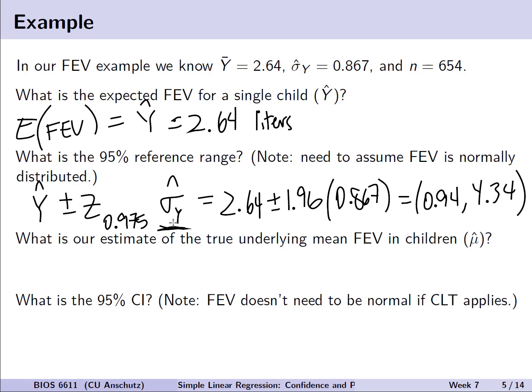So now we have the question, well what's the estimate of the true underlying mean for FEV in all children? Or in other words, what's our estimate of mu hat? Well in this case, we know based on the data we've been given, it is also equal to 2.64 liters. We have no predictors to use to say conditional on an x, what's the mean? And this represents what we saw previously too, that if we have a distribution, for example, if we assume x is normally distributed with mean 2.64, and variance 0.867 squared, that the mean for both x and the sample mean x bar will both be 2.64.